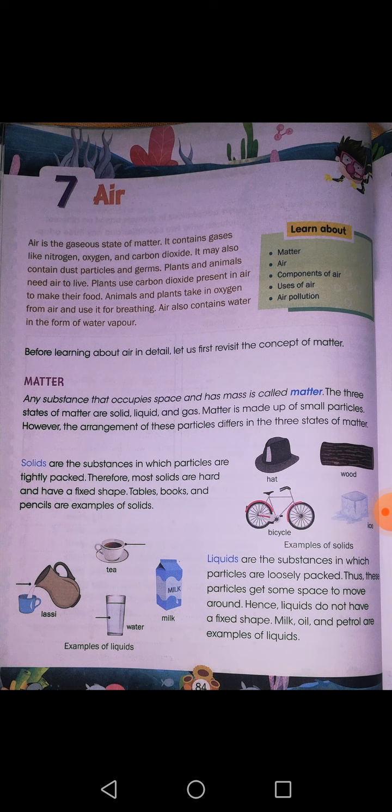All living things need air — whether it is an animal, whether it is a plant, whether it is we the human beings. Every living being on this earth needs air, which is basically a mixture of these gases. Plants use carbon dioxide from the air to prepare their food by the photosynthesis process. Animals and plants take in oxygen from air and use it for breathing, and we do too. Air also contains water in the vapour form — water is present in it but in vapour form, that is why you cannot see it.